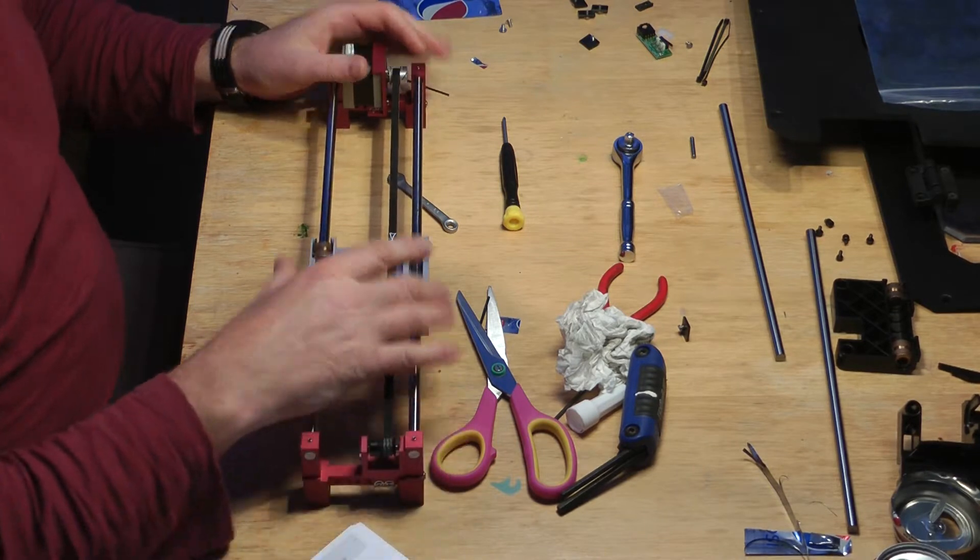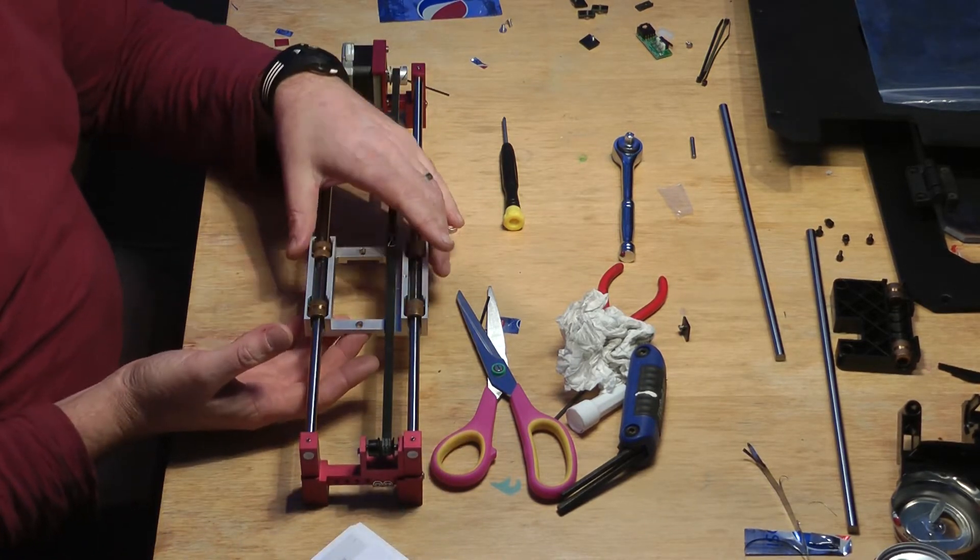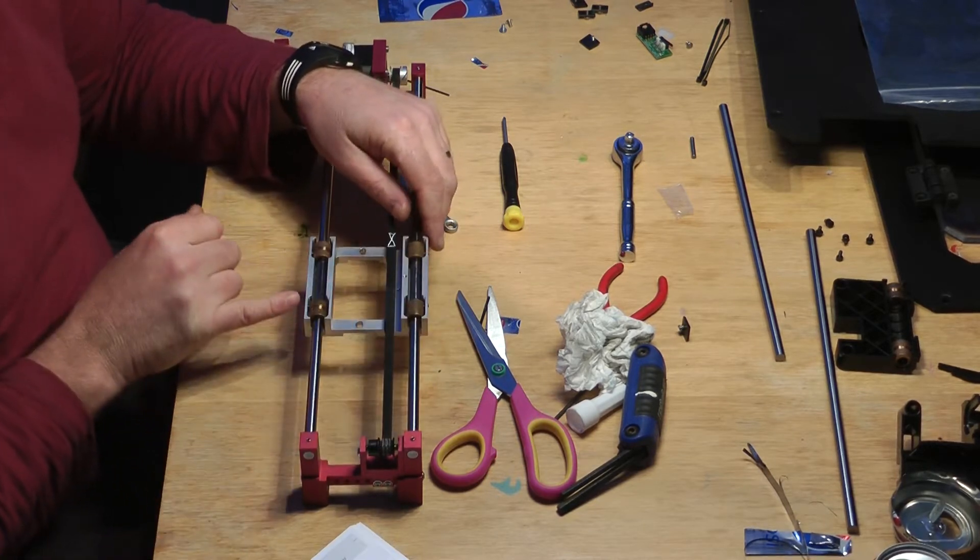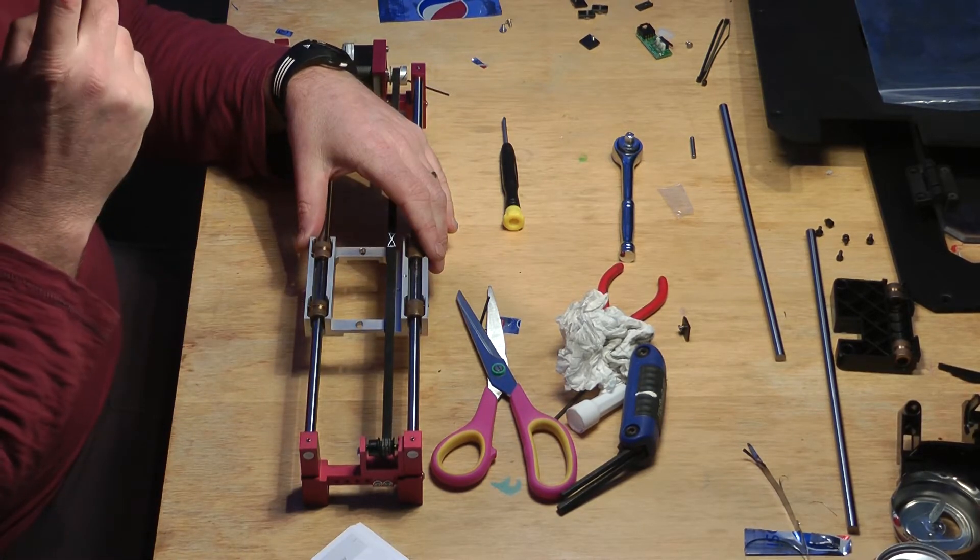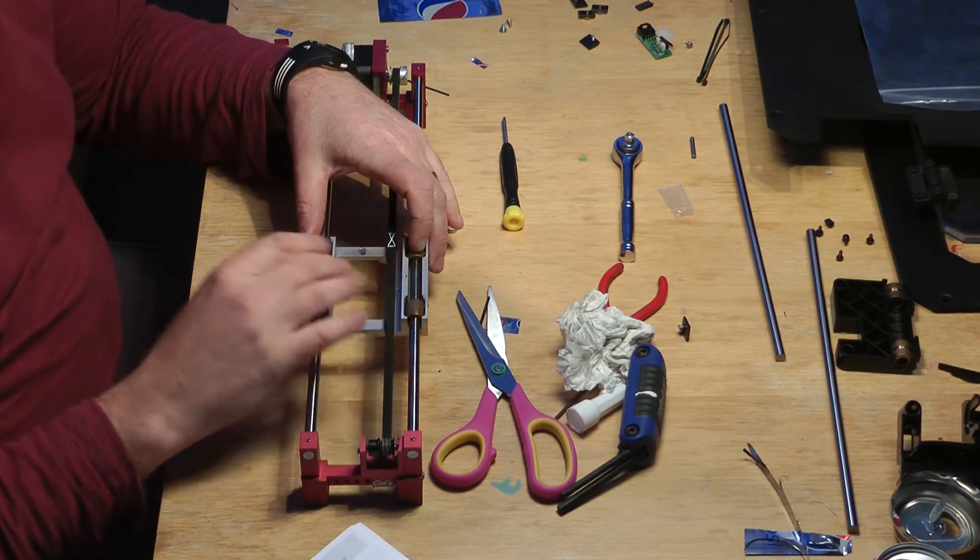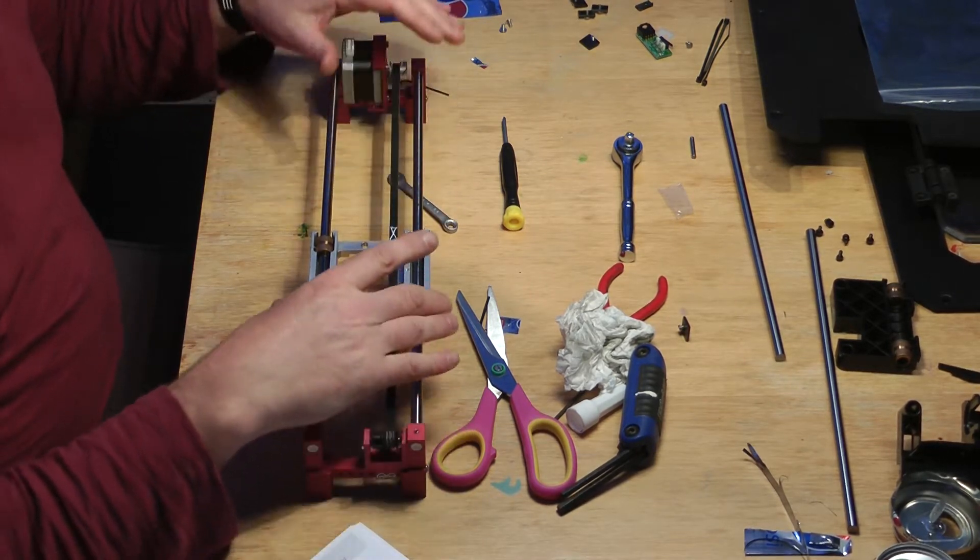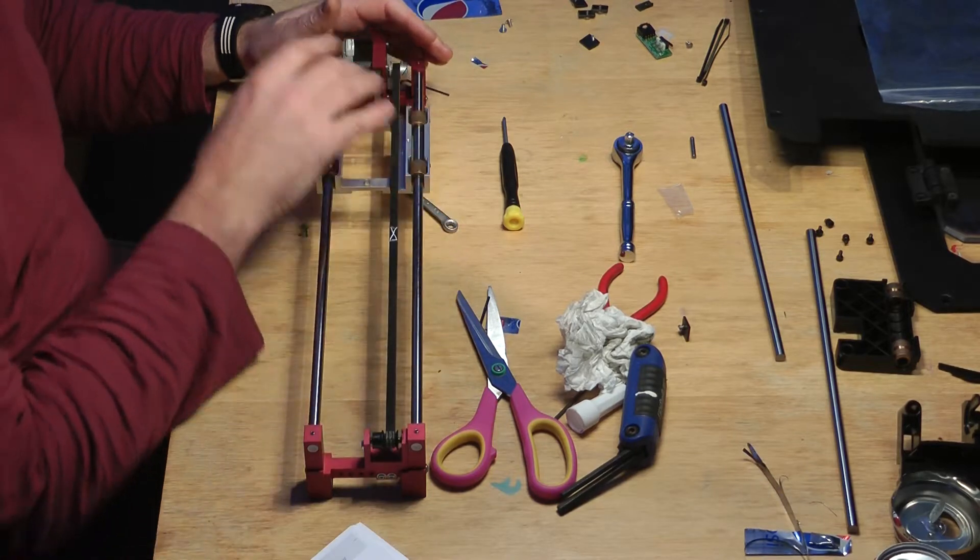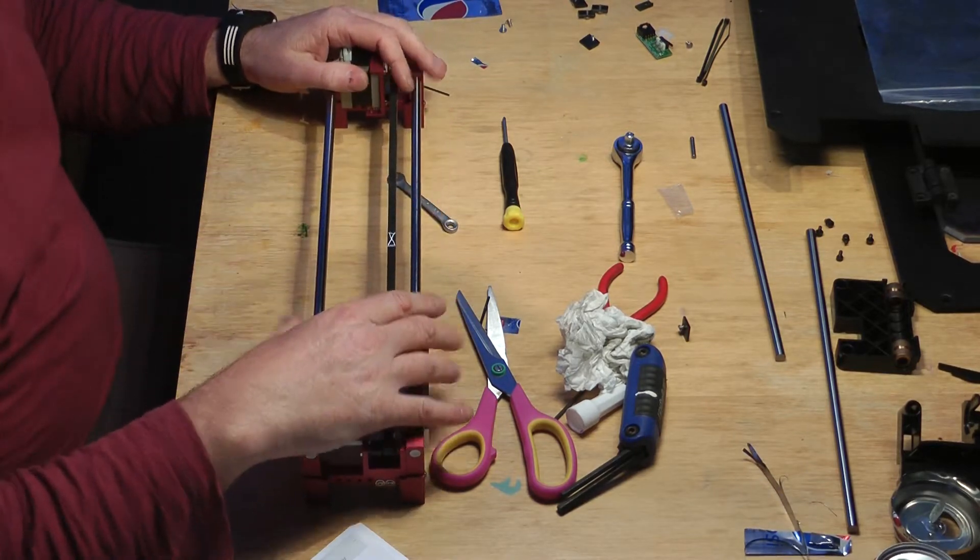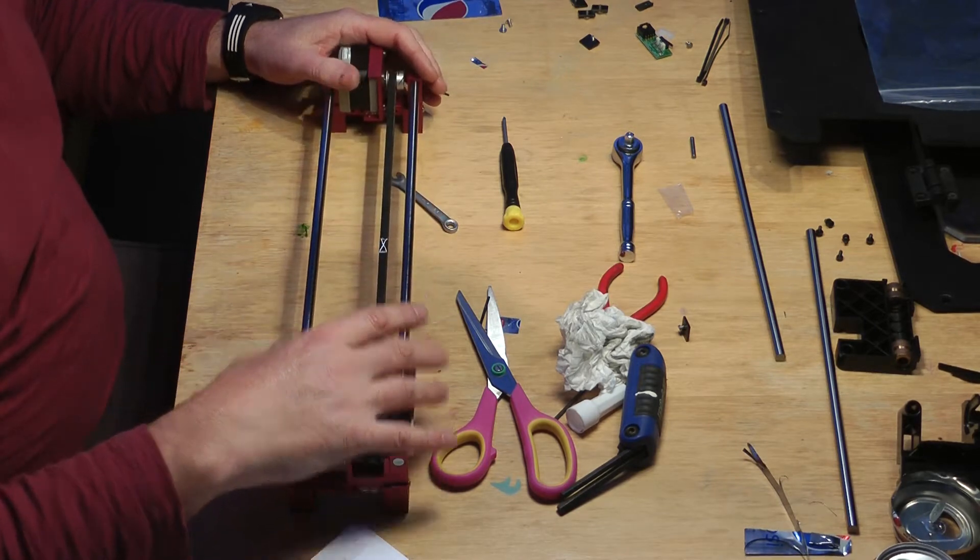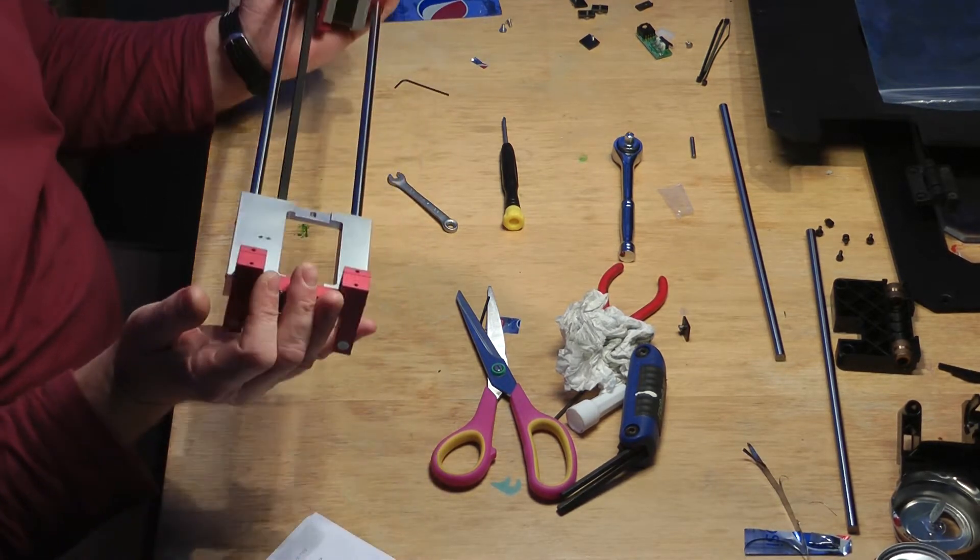One thing I found when I first fitted this on the original machine was it's very difficult to actually set up the carriage on the bosses without them distorting the rails. You get binding, especially when you came towards the ends of the rails, towards the actual X-Ends.